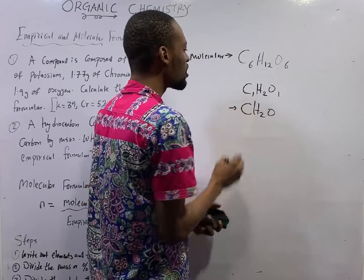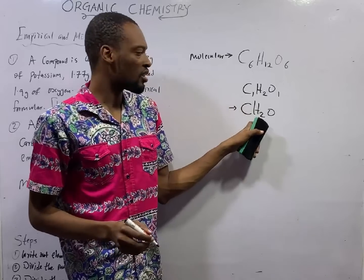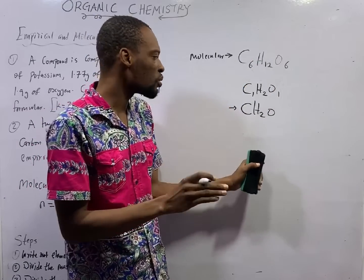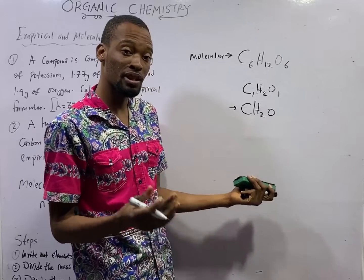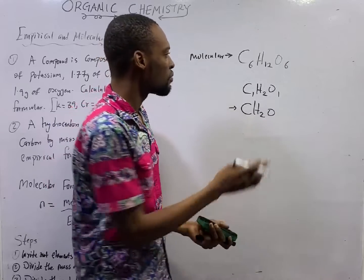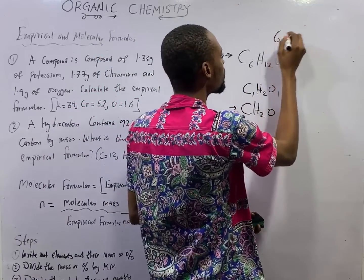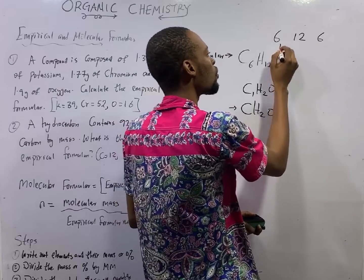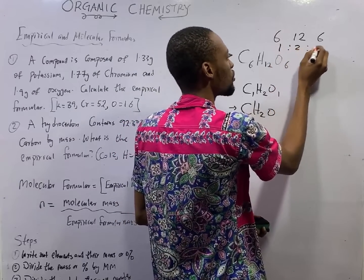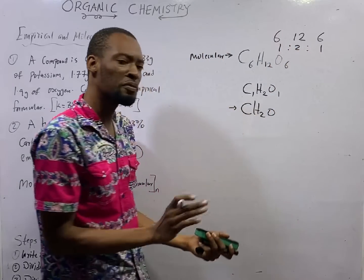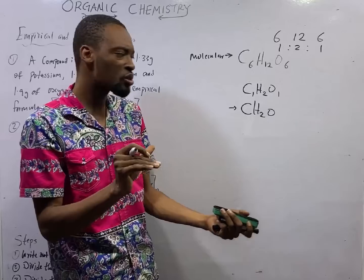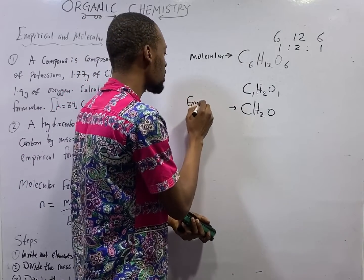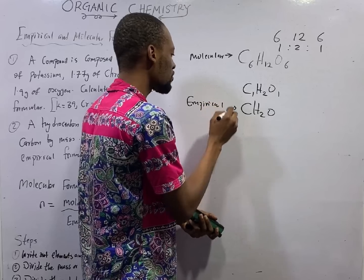CH2O is the simplest formula of glucose, which shows the ratio of elements as C:H:O in the ratio 1:2:1. Empirical formula basically shows the ratio in the simplest whole number.